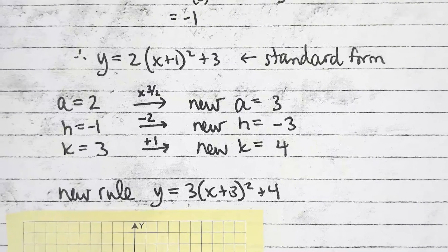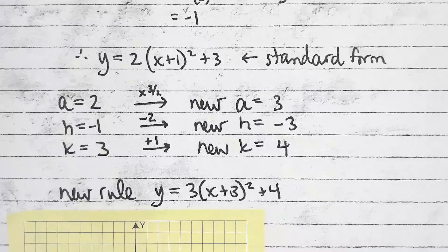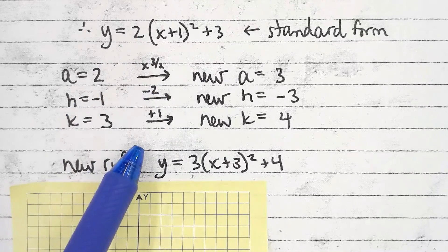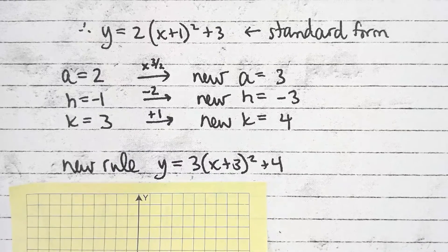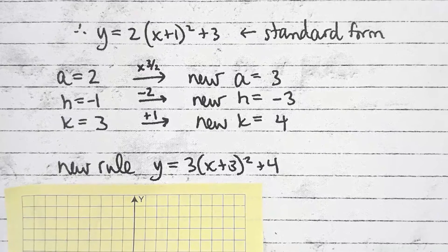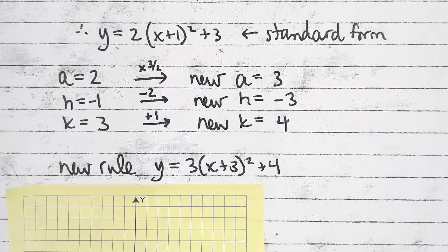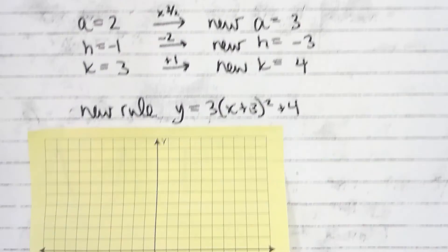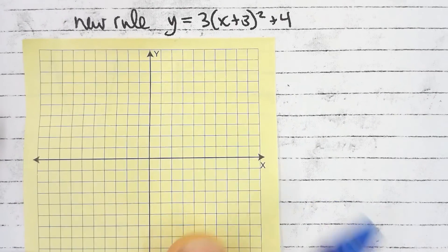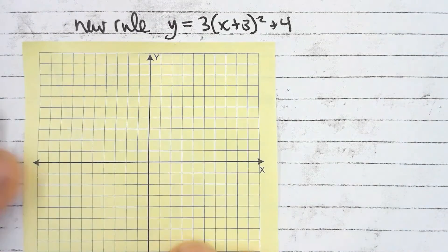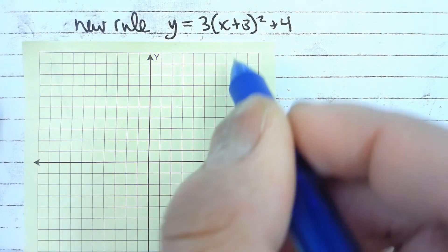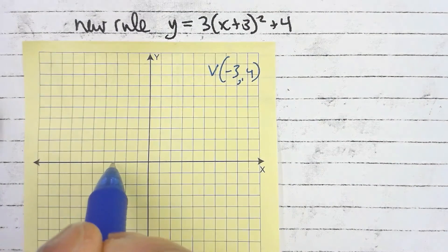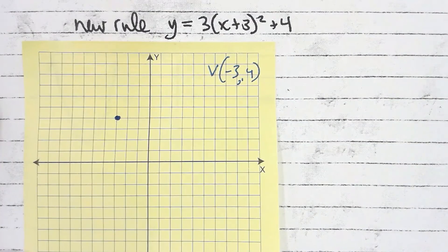There's the original rule in standard form — we transformed it into our new rule, and that's what we're graphing. A graph is as accurate as we can make it, unlike a sketch. I've got graph paper for this. To graph a parabola from standard form we need the vertex. The vertex here is at negative three and positive four — h is negative three, k is positive four.